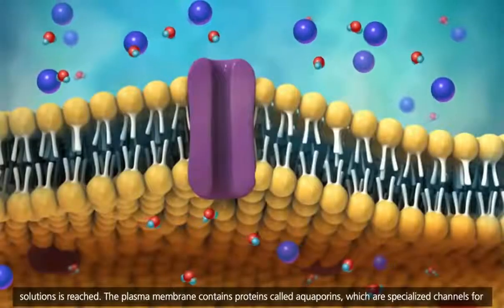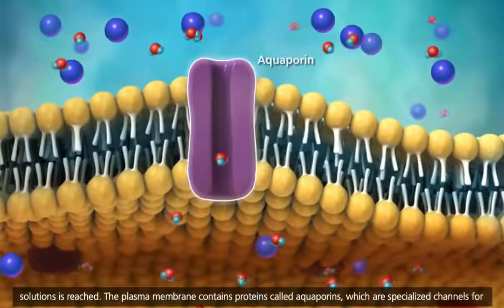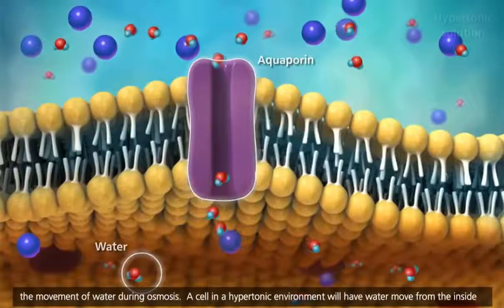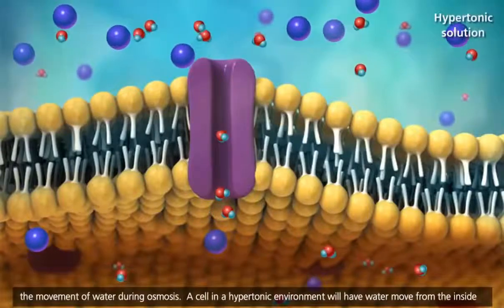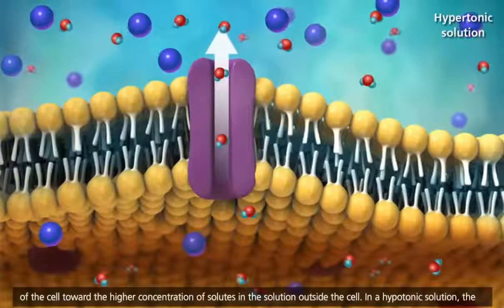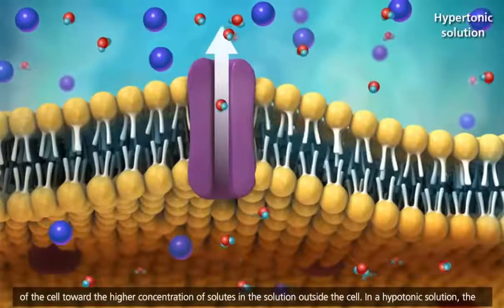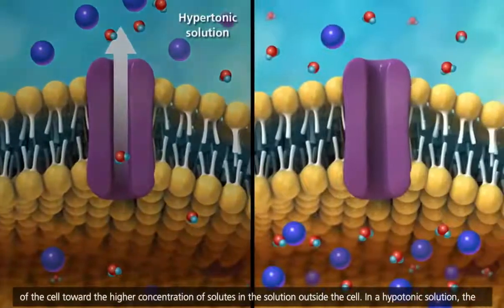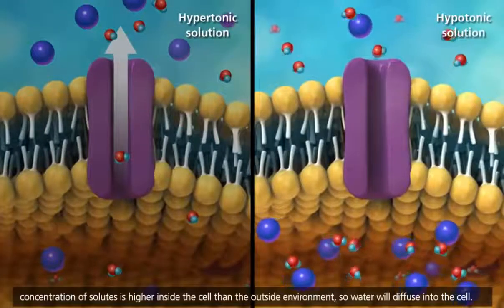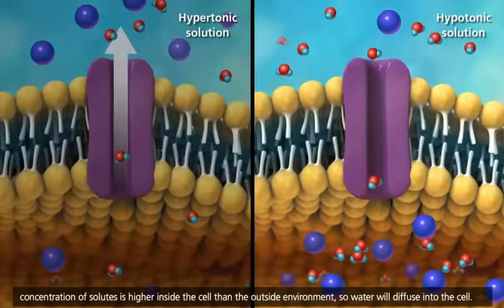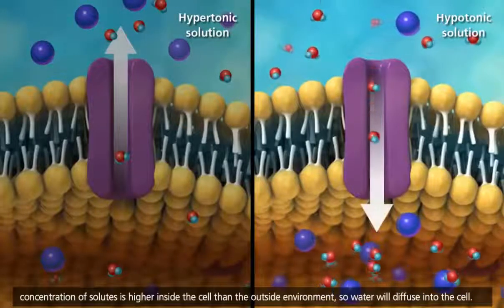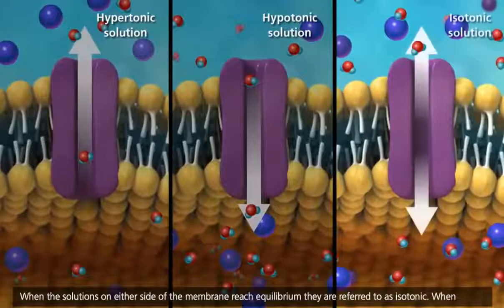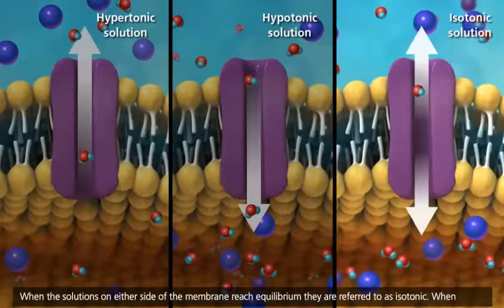The plasma membrane contains proteins called aquaporins, which are specialized channels for the movement of water during osmosis. A cell in a hypertonic environment will have water move from the inside of the cell toward the higher concentration of solutes in the solution outside the cell. In a hypotonic solution, the concentration of solutes is higher inside the cell than the outside environment, so water will diffuse into the cell. When the solutions on either side of the membrane reach equilibrium, they are referred to as isotonic.